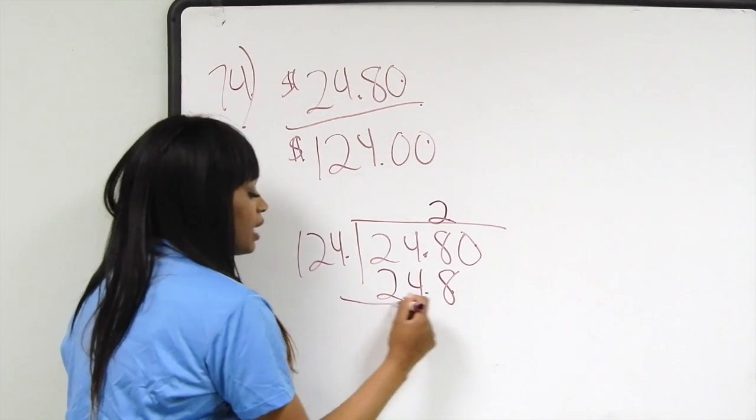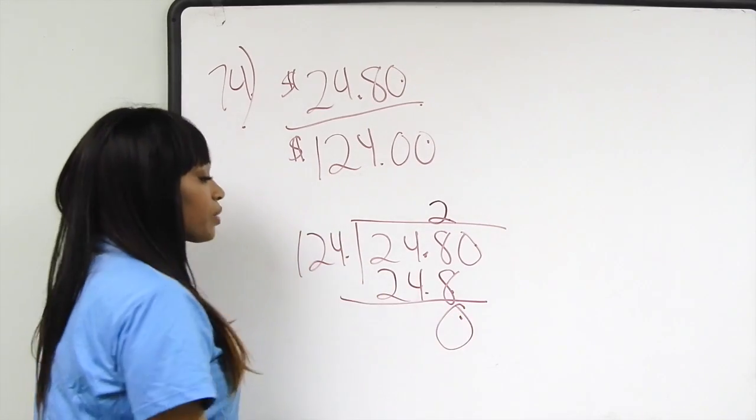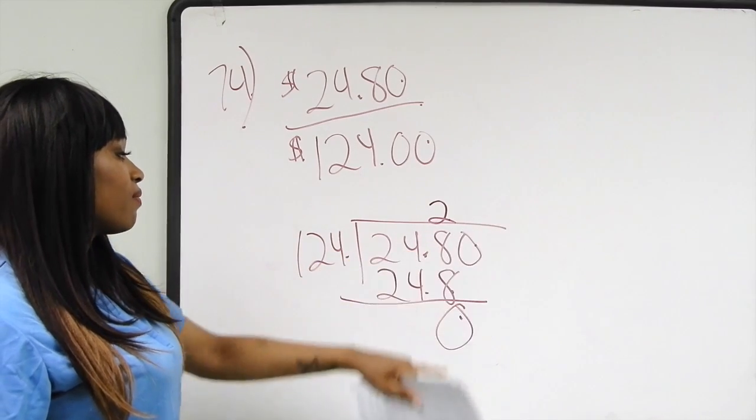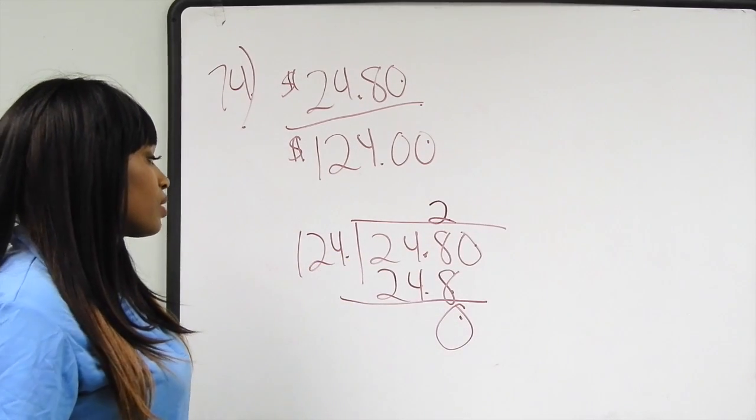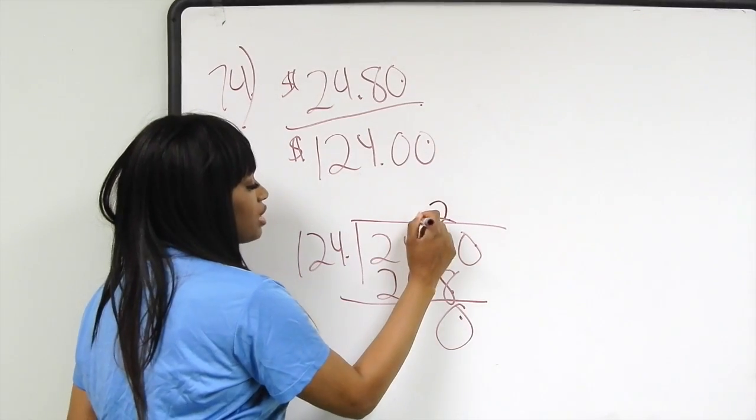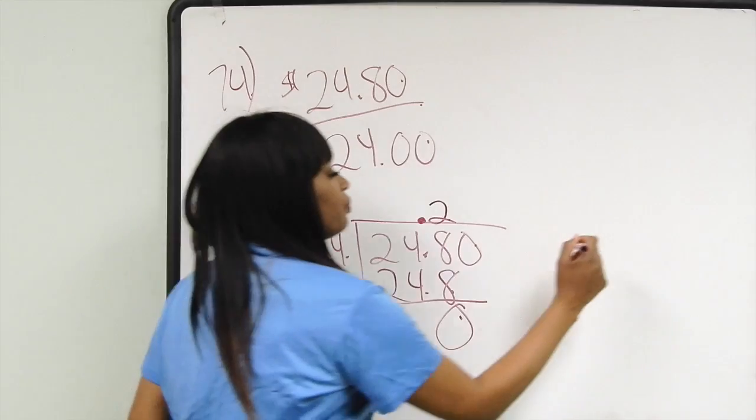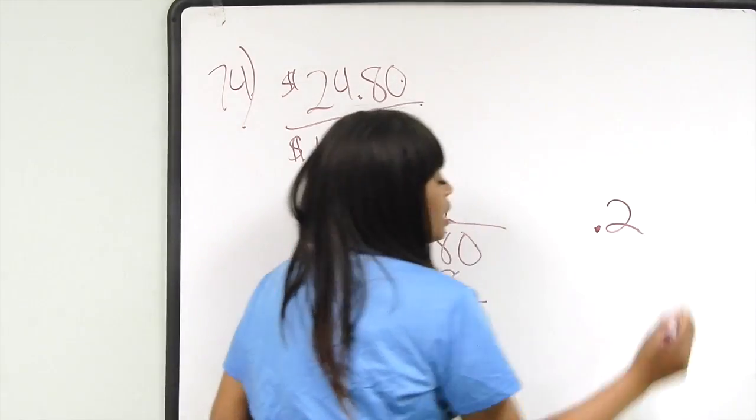But you want to remember that the 8 here is to the right of the decimal, so you want to make sure you put the decimal sign here. We have 0.2 as a decimal.